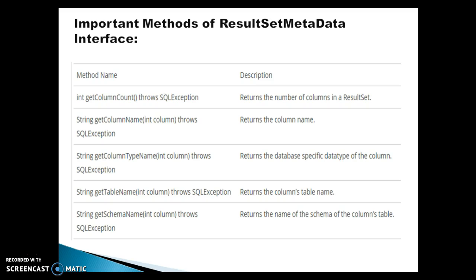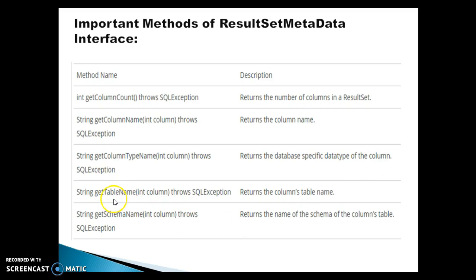There are some important methods of ResultSetMetadata. getColumnCount() returns the number of columns in the result set. getColumnName() takes a column index and returns the column name. getColumnTypeName() takes a column index and returns the database-specific data type of the column. getTableName() takes a column index and returns the table name for that column. getSchemaName() takes a column index and returns the name of the schema of the column's table.